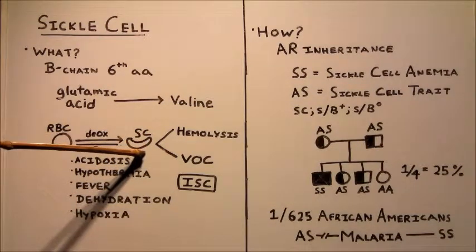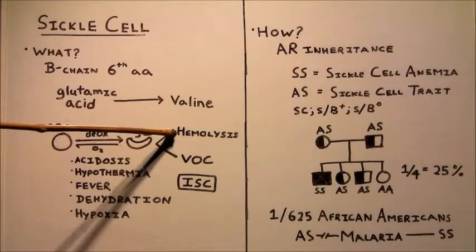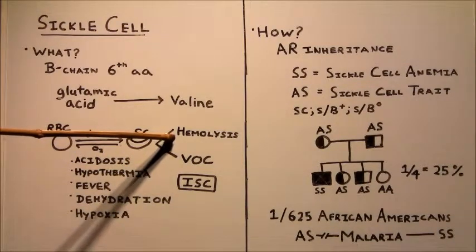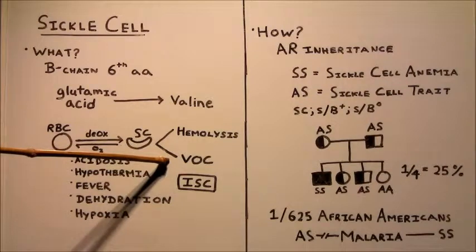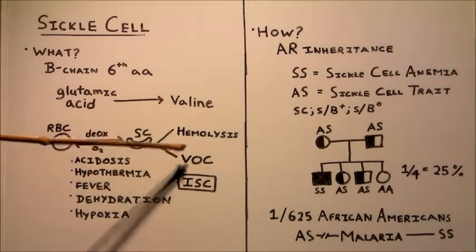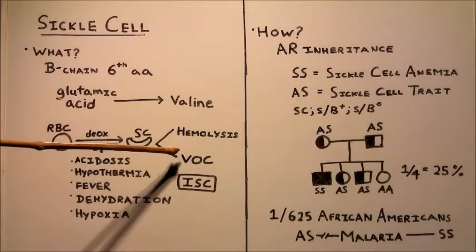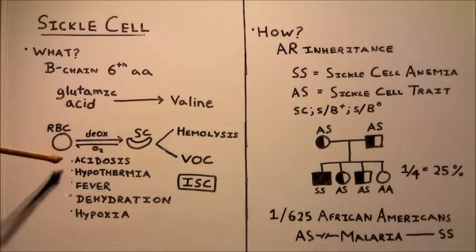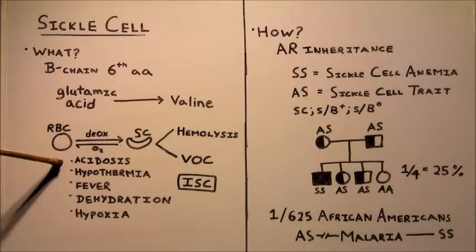These sickle cells can lead to a number of complications, including hemolysis, which is the destruction of red blood cells, and vaso-occlusive crises. And I'm going to cover both of these in more detail later on. Now there are certain elements that can increase the sickling of red blood cells.